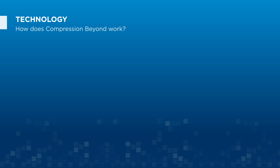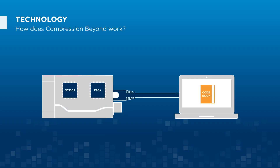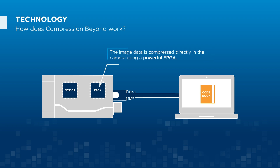How does Compression Beyond work? The principle of lossless compression of image data is based on the use of redundancies. Therefore, images that contain many redundancies are more compressible. The image data is compressed directly in the camera using a powerful FPGA.